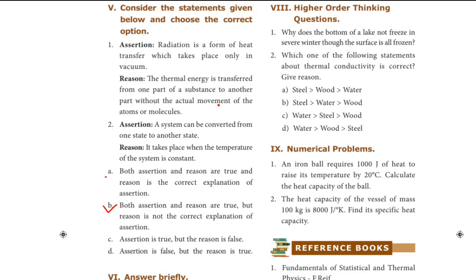Second assertion. A system can be converted from one state to another state. The reason is it takes place when the temperature of the system is constant. The answer is option A. Both assertion and reason are true and reason is the correct explanation of assertion.